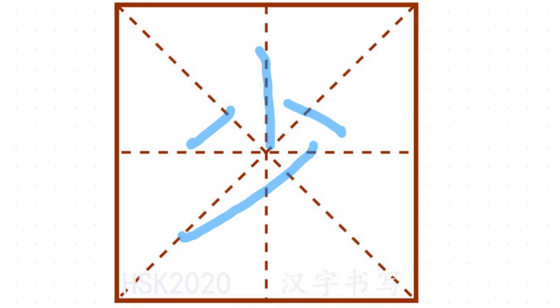For example: 多少 (how much), 减少 (reduce), 缺少 (lack), 至少 (at least).